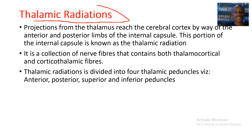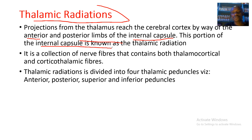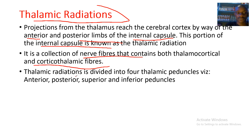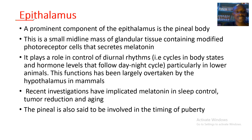Projections from the thalamus reach the cerebral cortex by way of the anterior and posterior limbs of the internal capsule. This portion of the internal capsule is known as the thalamic radiation, and it is a collection of nerve fibers containing both thalamocortical and corticothalamic fibers. This thalamic radiation is divided into four thalamic peduncles: the anterior, posterior, superior, and inferior peduncles.